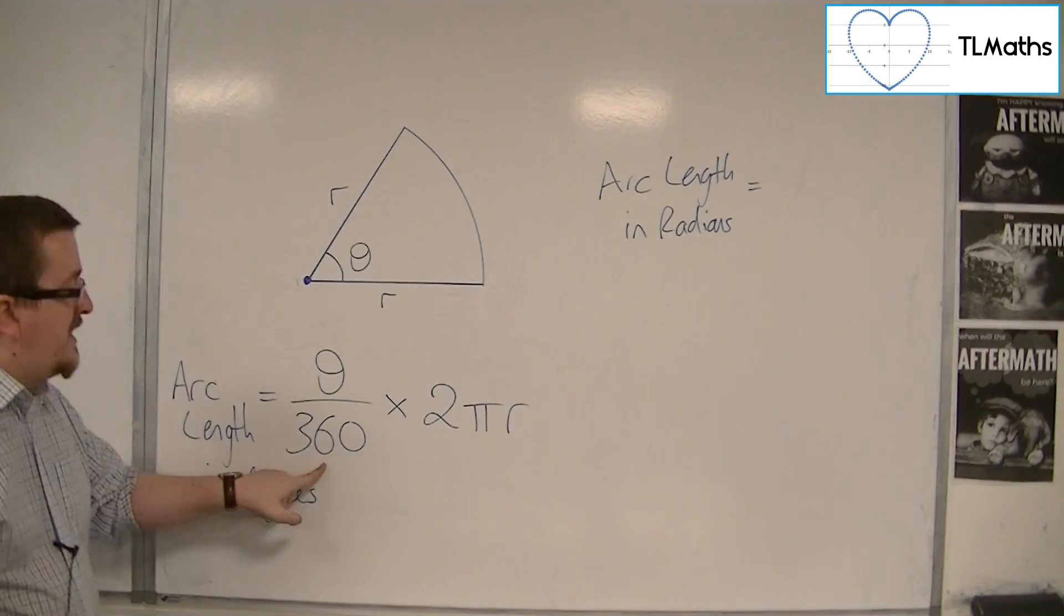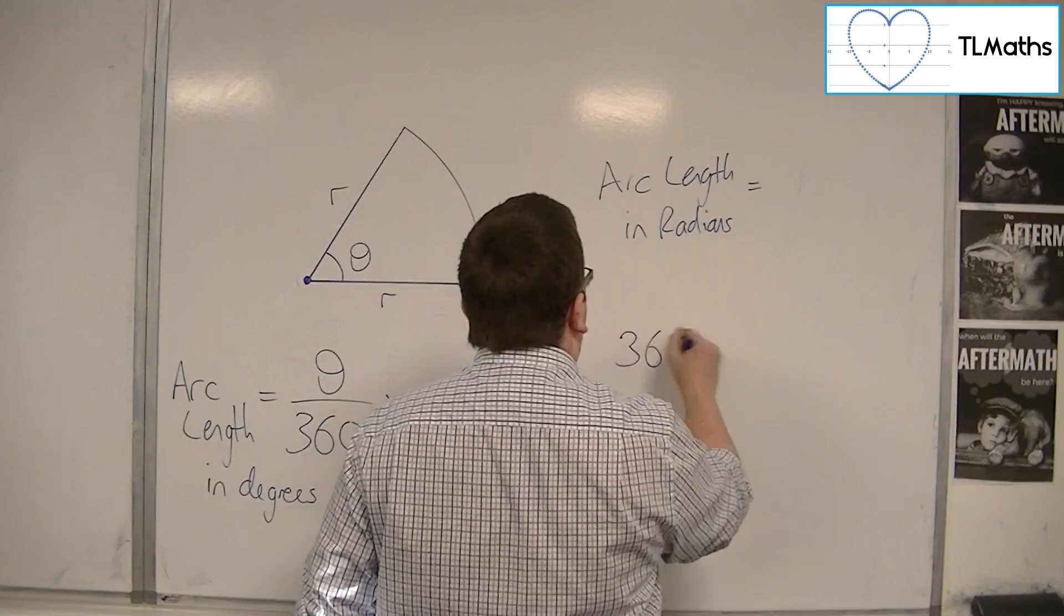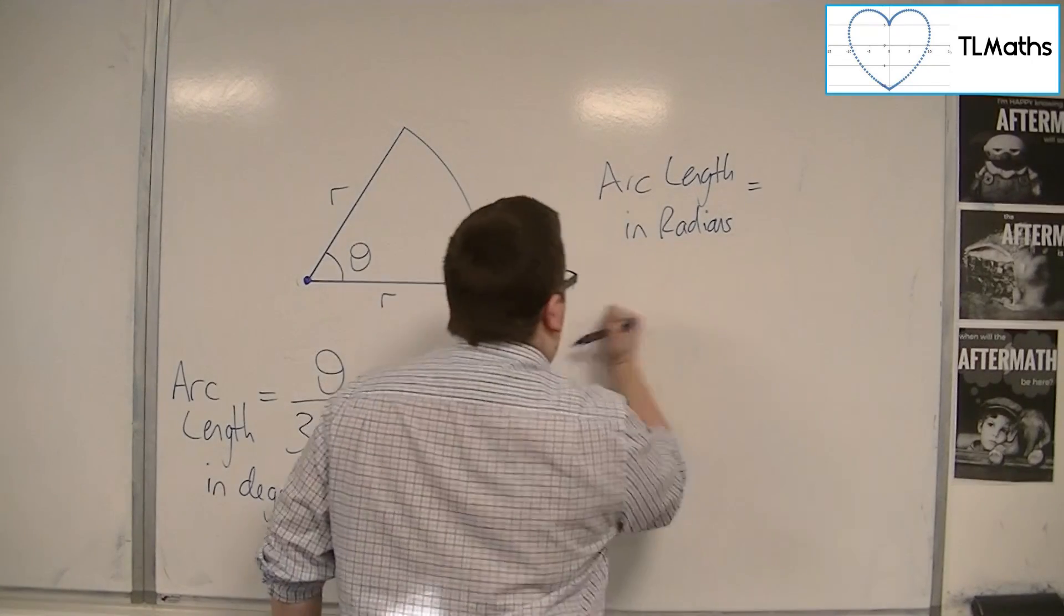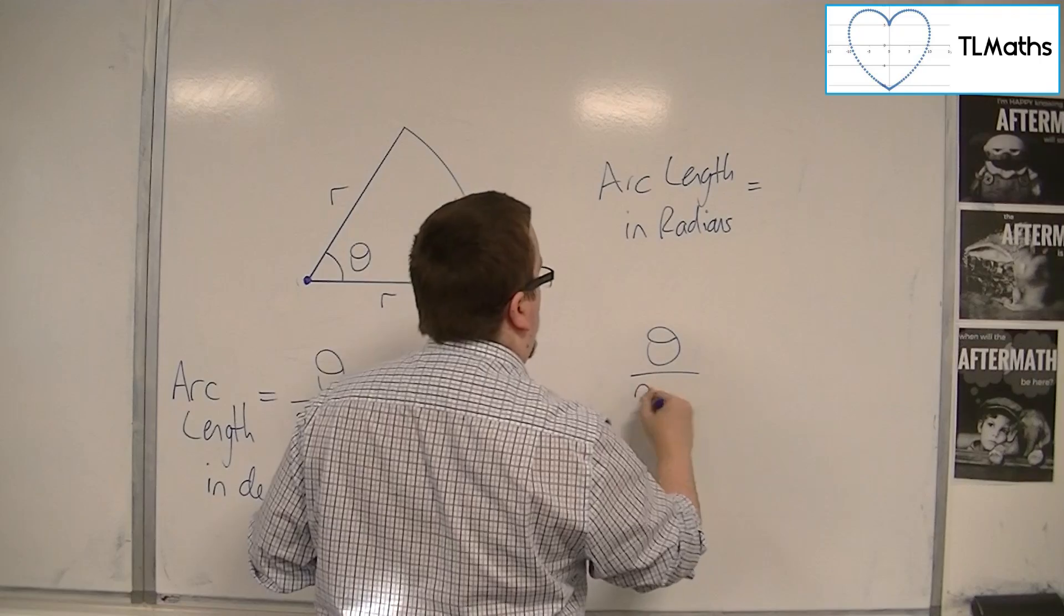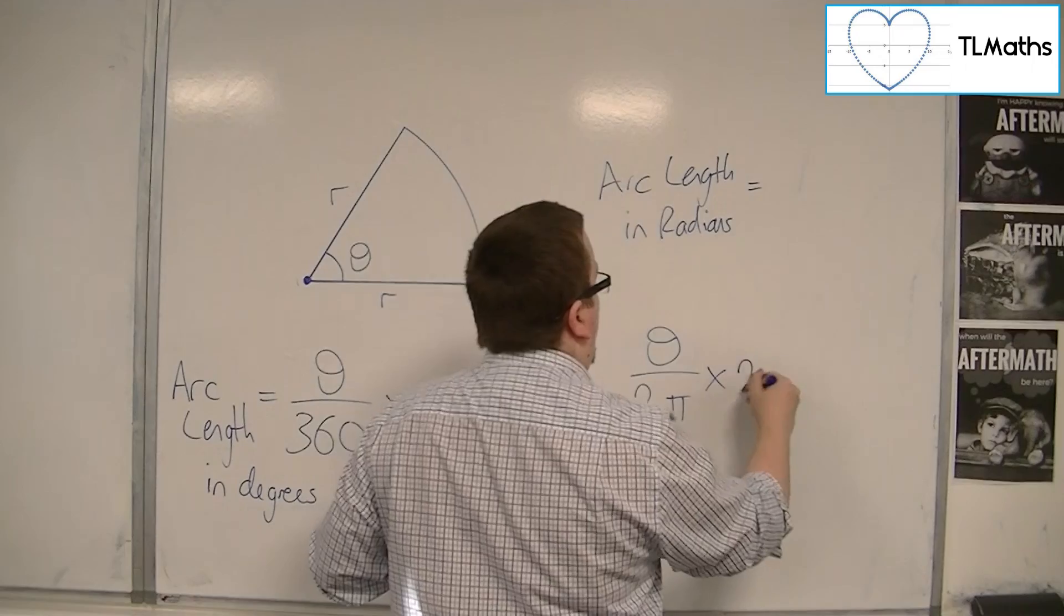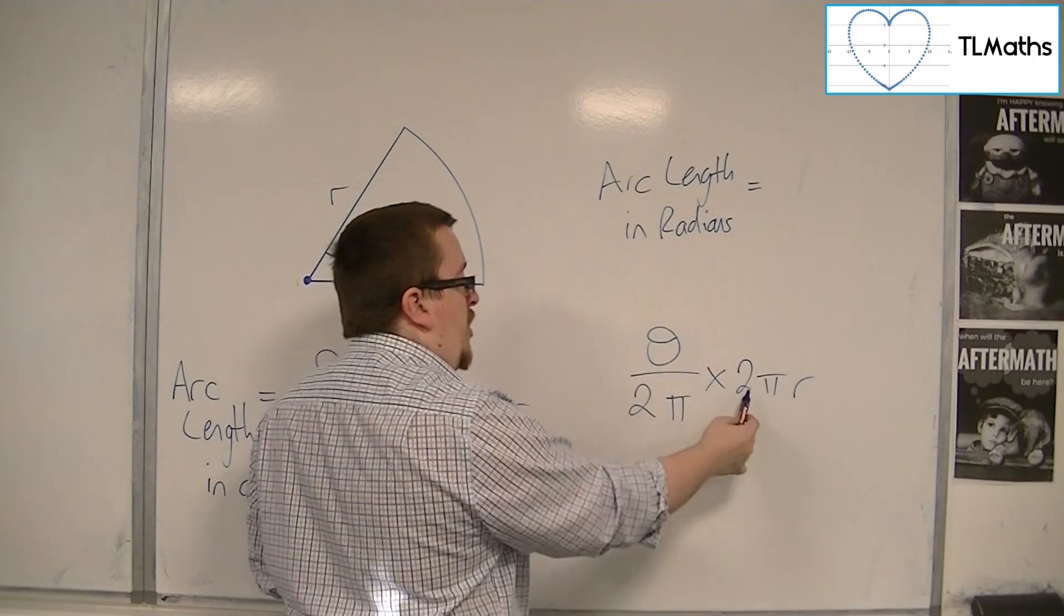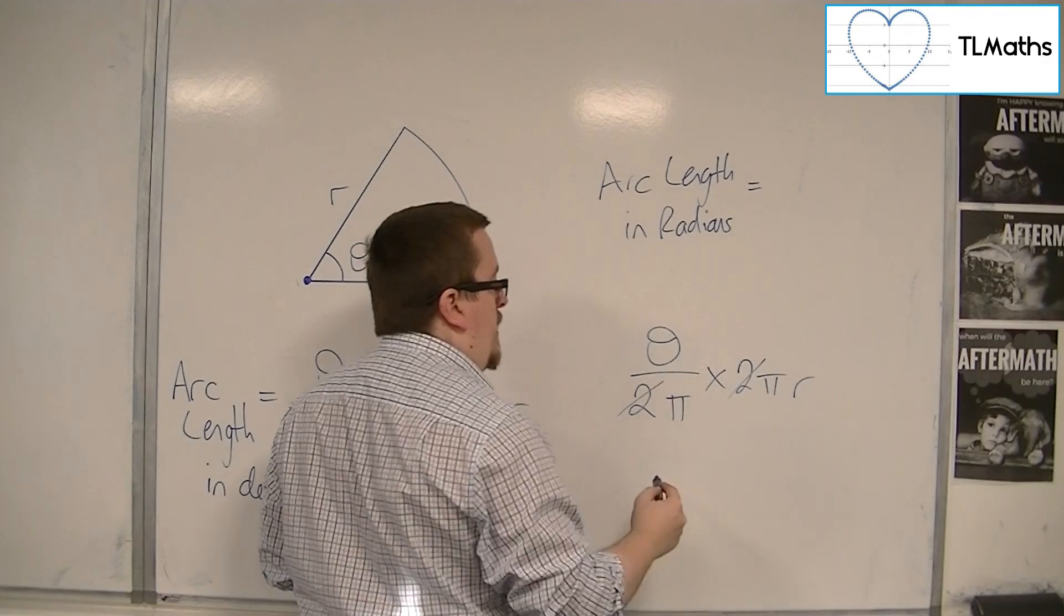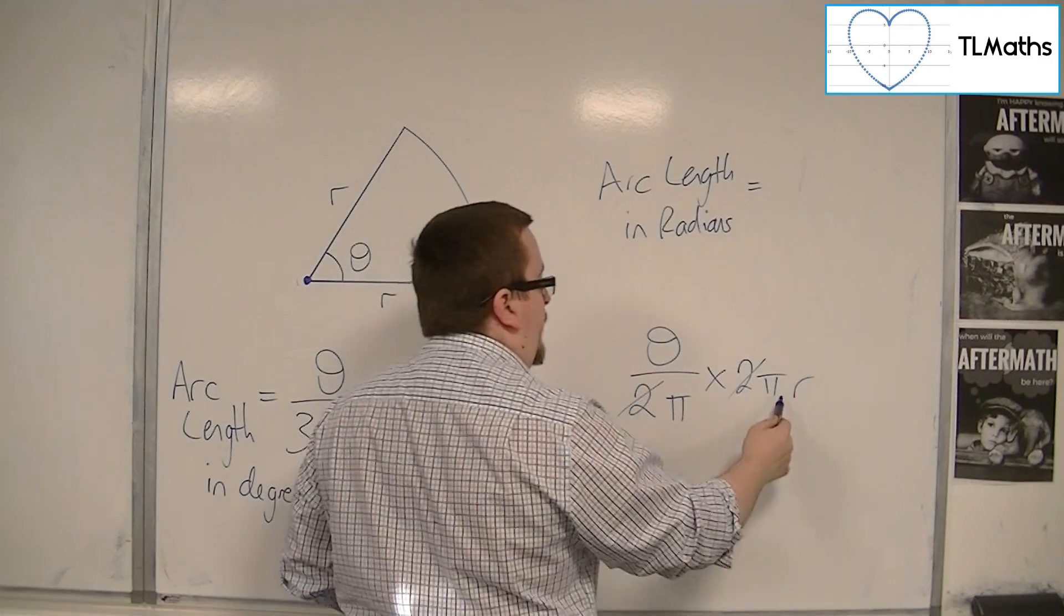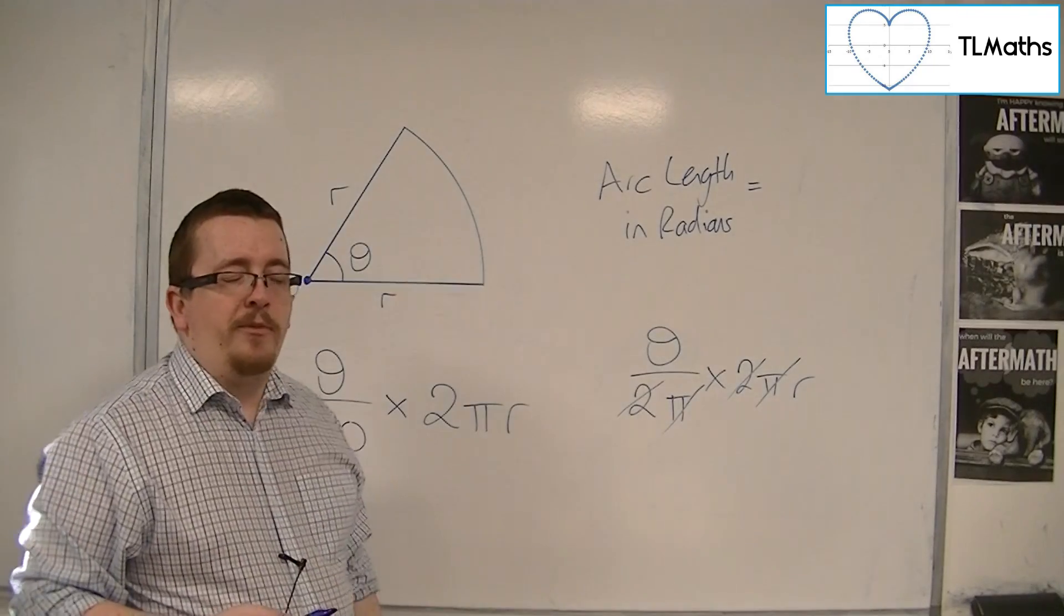I'm dividing by 2 and timesing by 2, so they cancel each other out. Dividing by pi and timesing by pi, cancel each other out. And I'm left with theta times r.